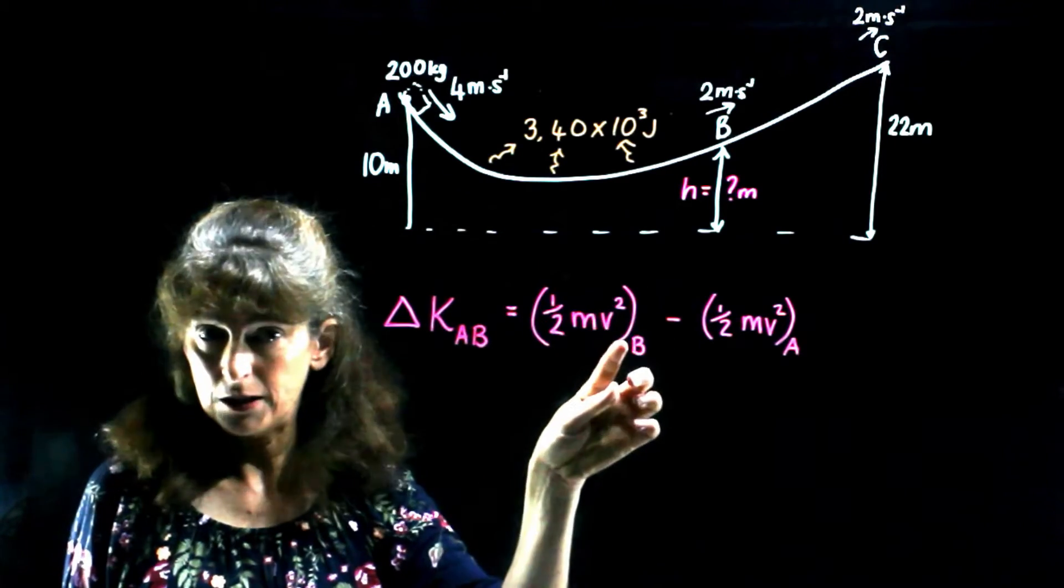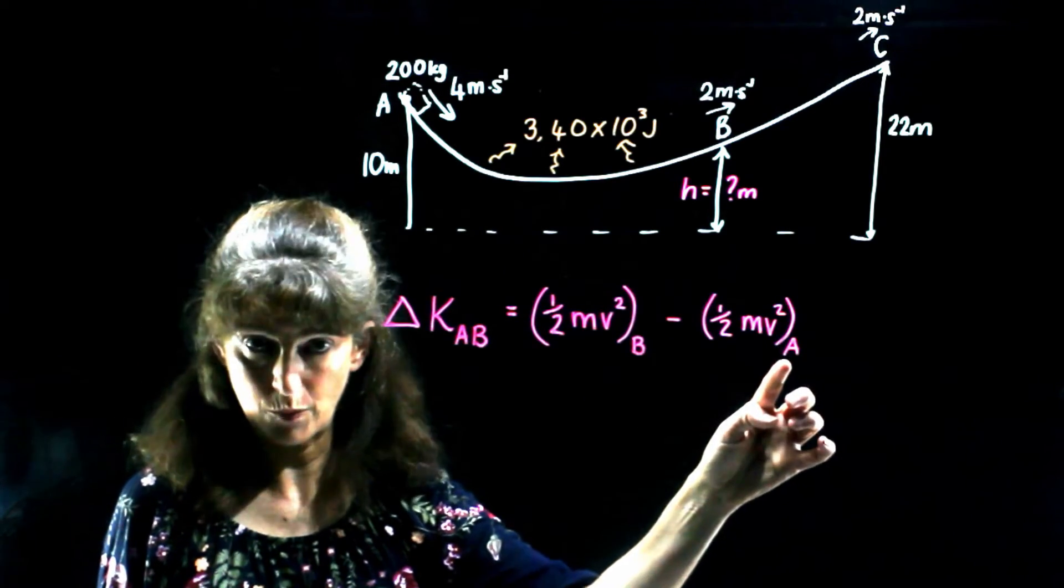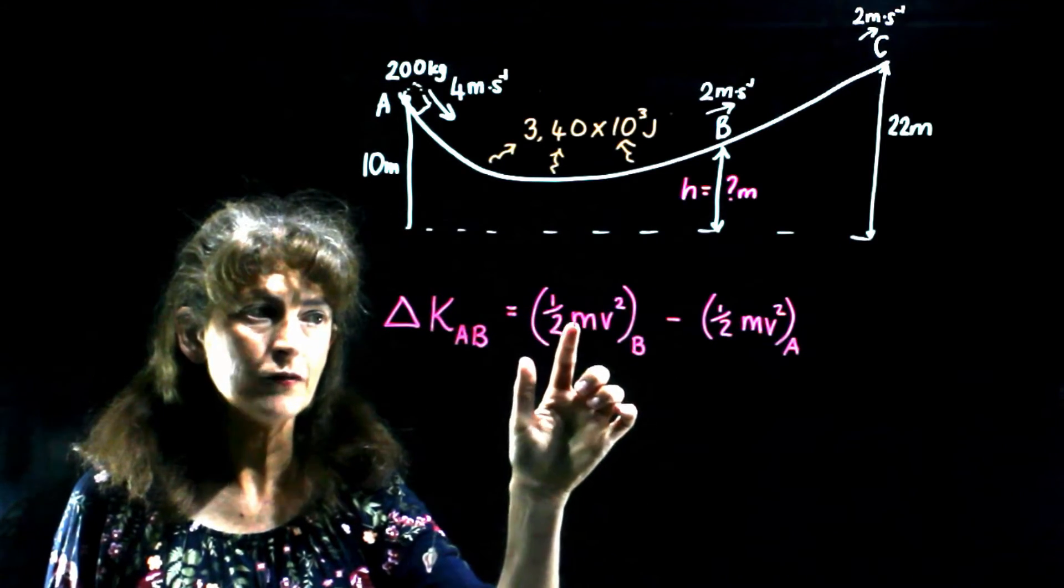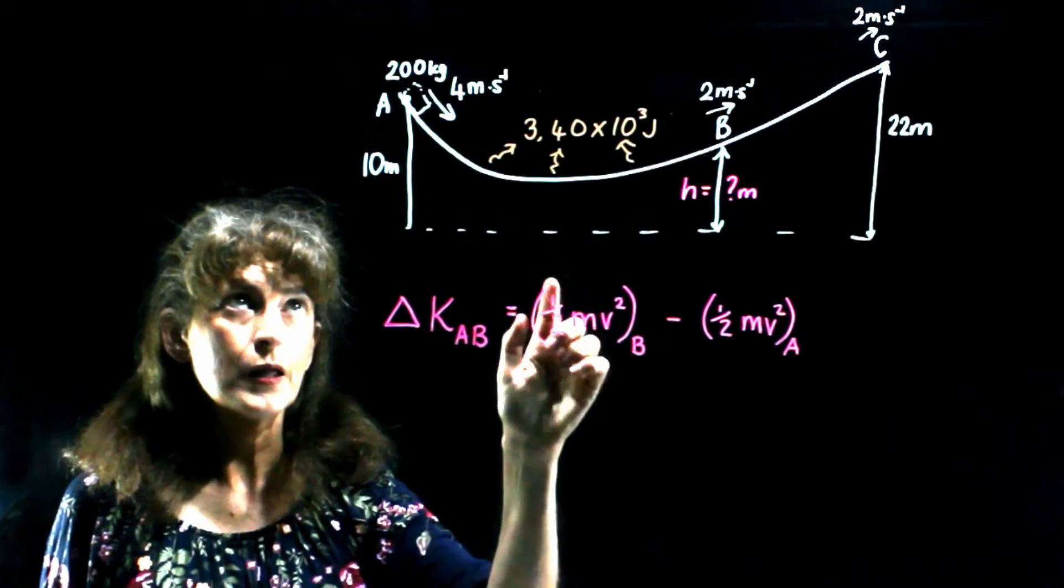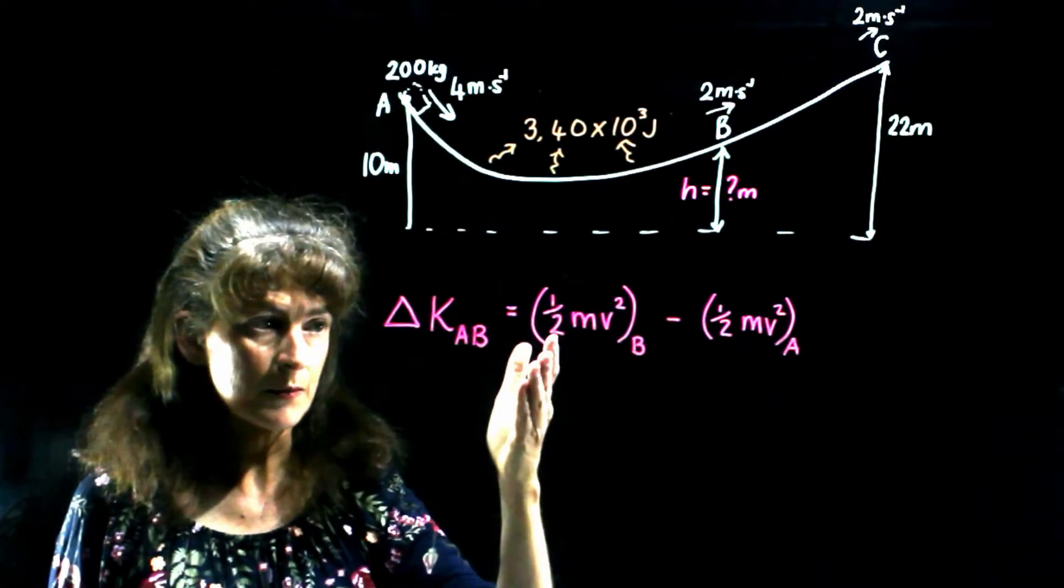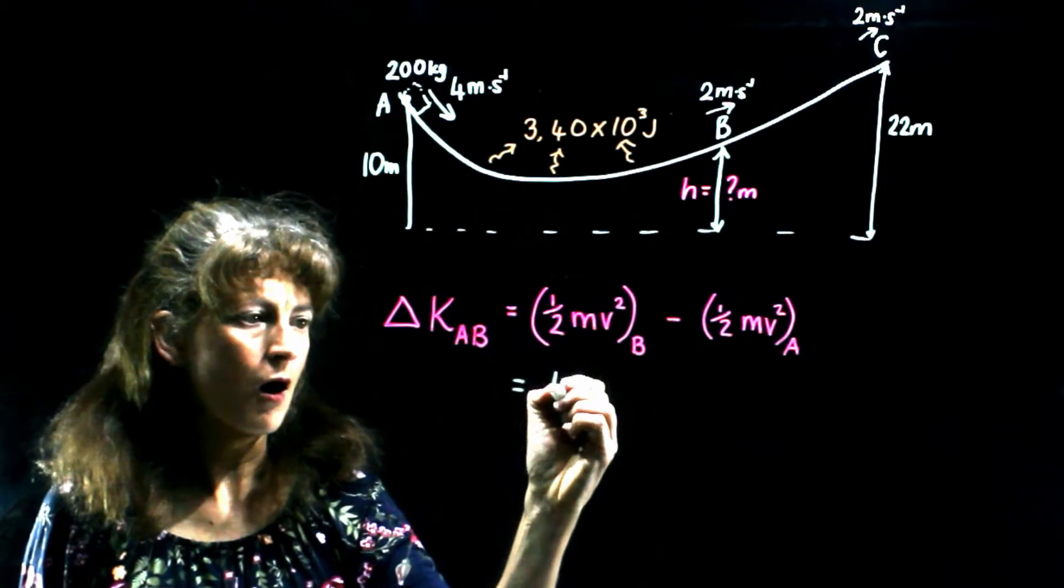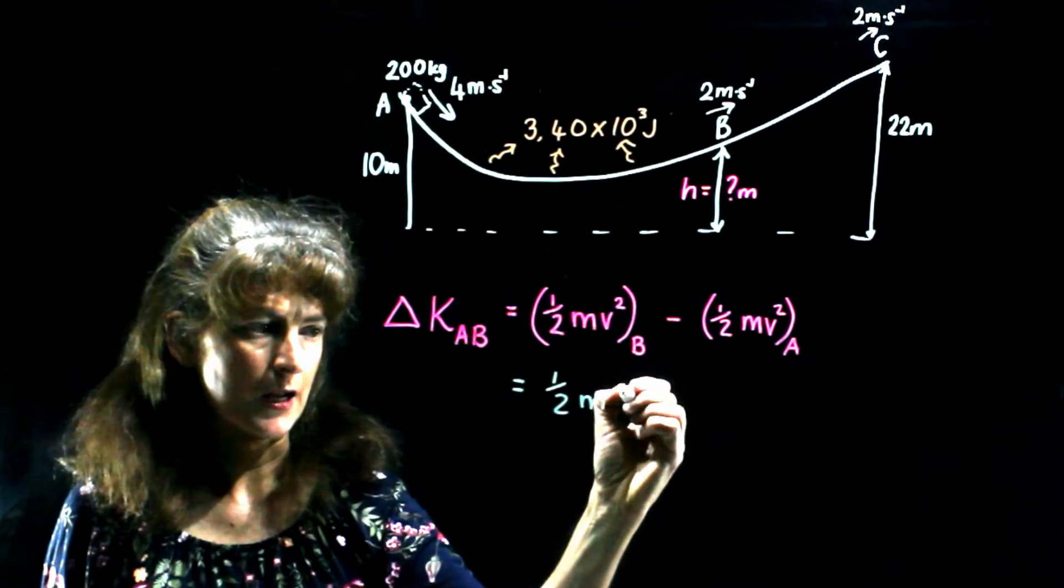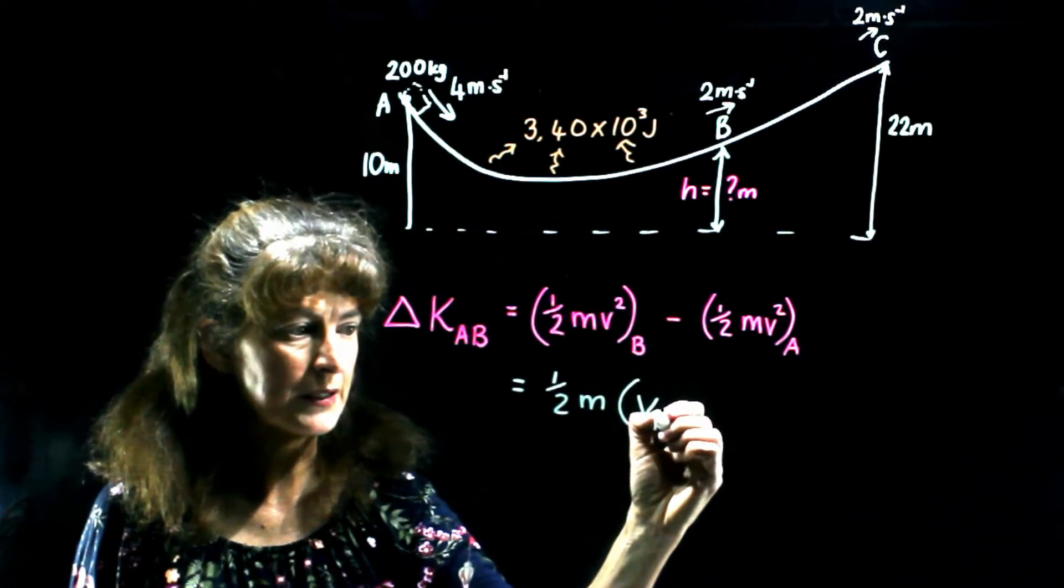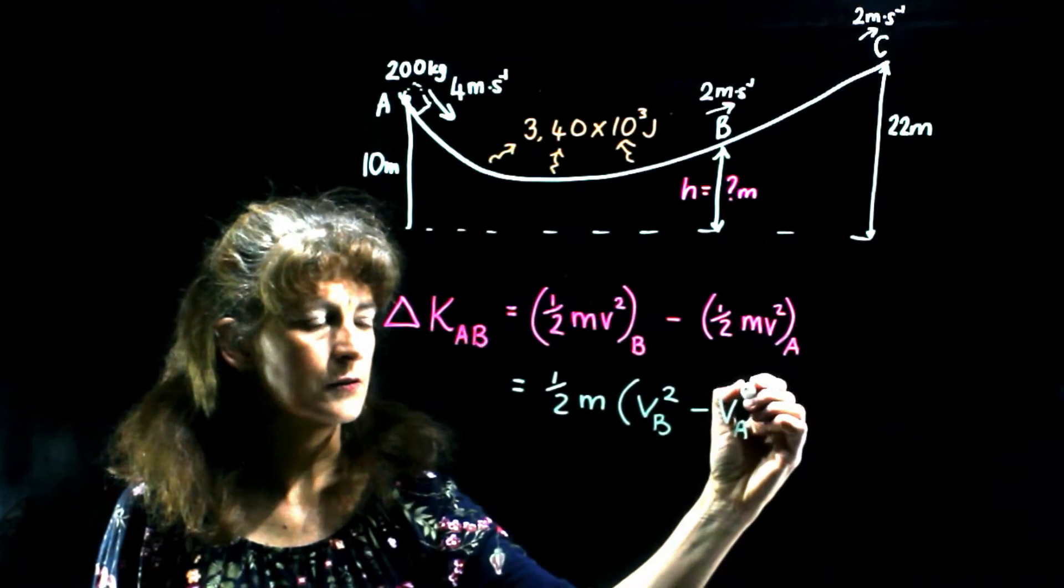Final kinetic energy, in other words, at point B minus initial kinetic energy, in other words, at point A. We know that kinetic energy equals half mv squared. m is 200 kilograms. v is what changes. The mass doesn't change. So we can rather write this as half m, which doesn't change, multiplied by v final, which is vb squared minus va squared.